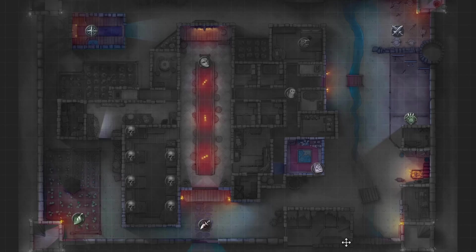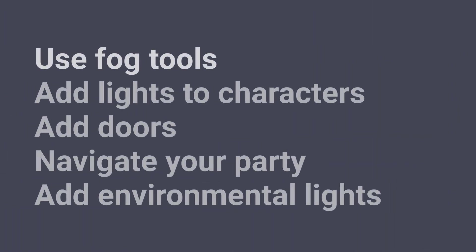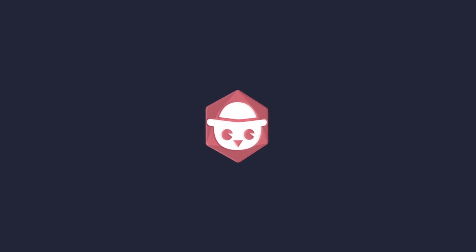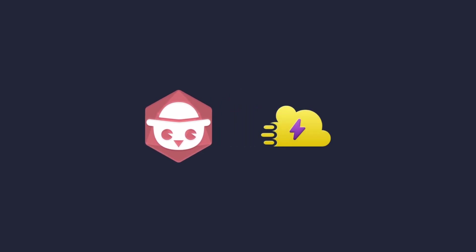You can run beautiful line-of-sight explorations in Albear Rodeo with Dynamic Fog. Here's how. We'll show you how to use fog tools, add lights to characters, add doors, navigate your party, and add environmental lights. Before you start you'll need to open a room in your Albear Rodeo account and install and enable the Dynamic Fog extension in that room.